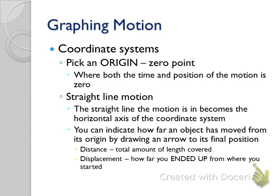If I walked one lap around the room, my starting point is here — what's my displacement? Zero. I covered a lot of distance, but my displacement was zero because I ended up exactly where I started. That concept is tricky. Displacement is the straight line from where I started to where I ended up — the shortest route gives me my displacement.